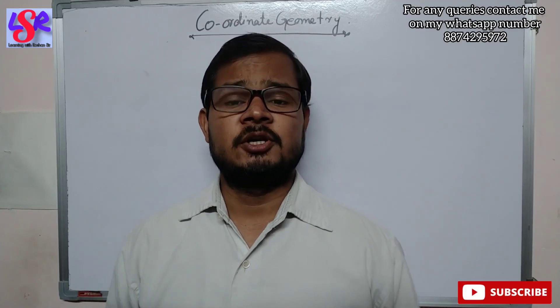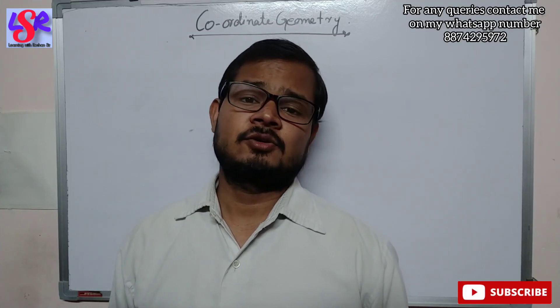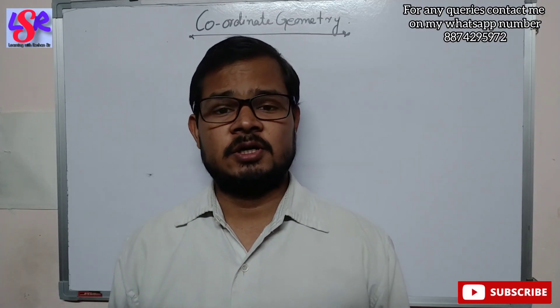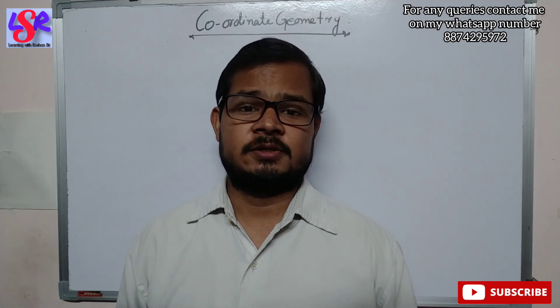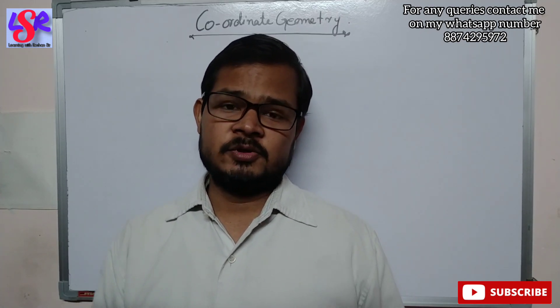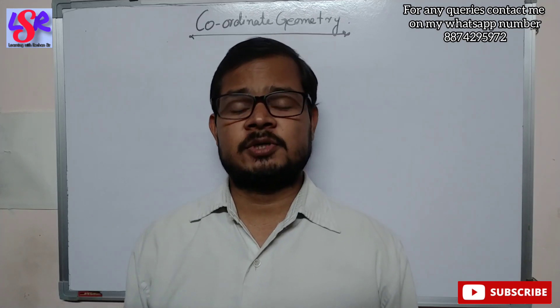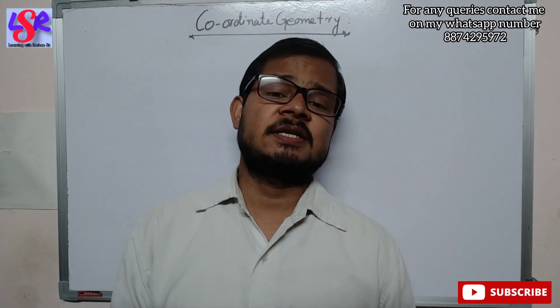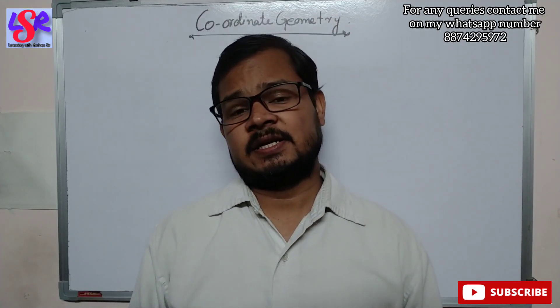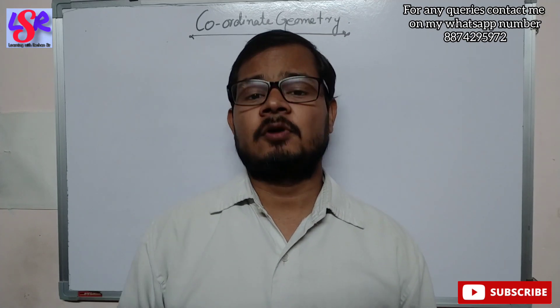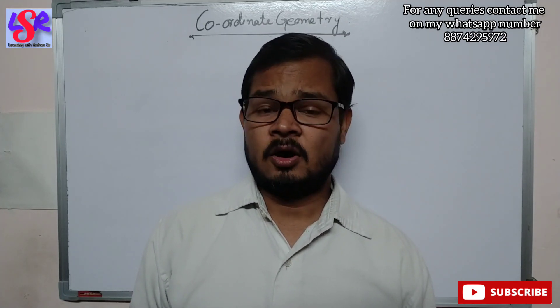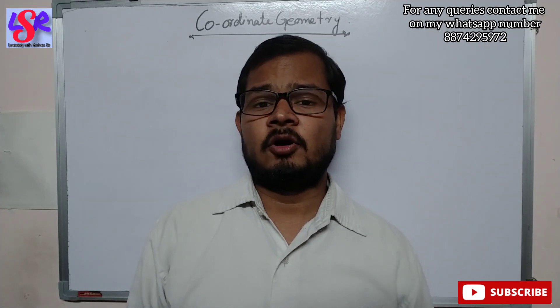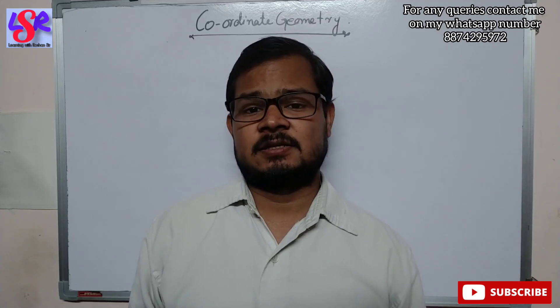Hello everyone. Here we are going to start with the new unit that is coordinate symmetry. In this unit we will be studying about the two numbers that are known as coordinates. These two numbers, the first one is used to represent x and the next one is used to represent y. The pair number x is the distance from the y axis and the second number y is the distance from the x axis. These two numbers are used to represent our coordinate axis position.